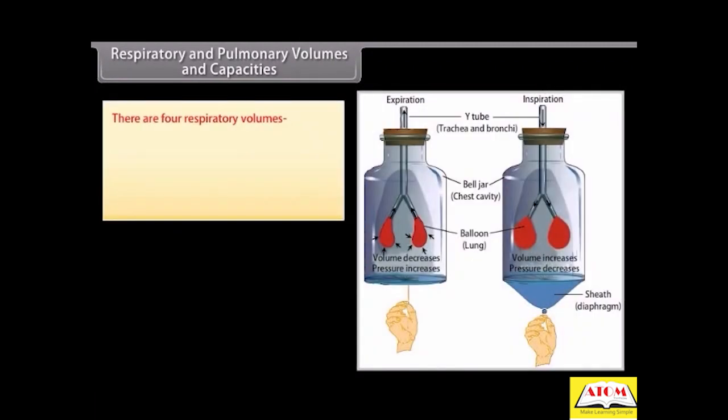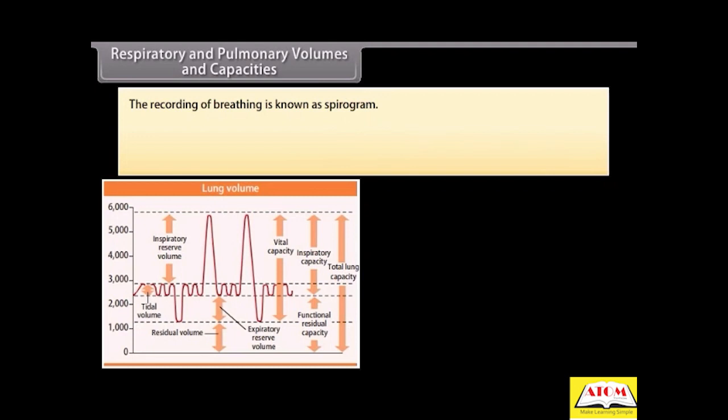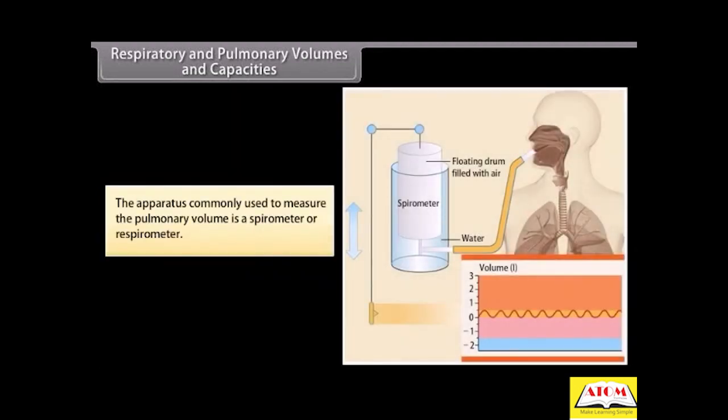Respiratory and pulmonary volumes and capacities. There are four respiratory volumes: tidal volume (TV), inspiratory reserve volume (IRV), expiratory reserve volume (ERV), and residual volume (RV). And four respiratory capacities: inspiratory capacity (IC), functional residual capacity (FRC), vital capacity (VC), and total lung capacity (TLC). The recording of breathing is known as a spirogram. The quantities of air that lungs can receive, hold, and expel under different conditions are called pulmonary volumes, and combination of two or more pulmonary volumes are called pulmonary capacities. The apparatus commonly used to measure pulmonary volume is a spirometer or respirometer.